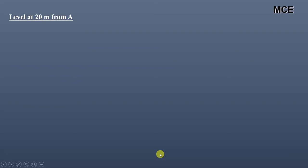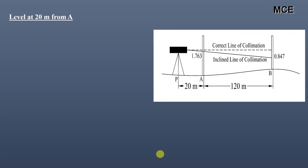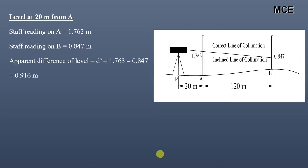Now when the level is at 20 meters from station A, staff reading on A is 1.763 meters and staff reading on B is 0.847 meters. So the apparent difference of level is 1.763 minus 0.847 which equals 0.916 meters.